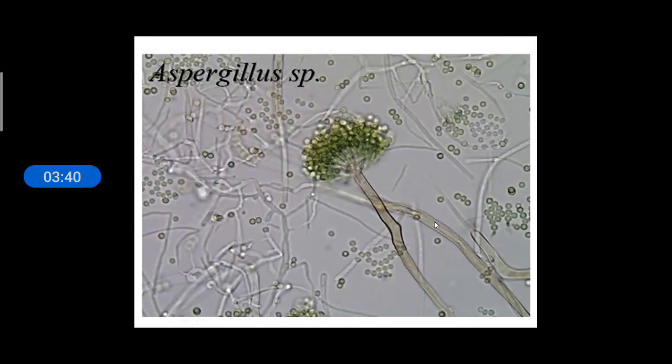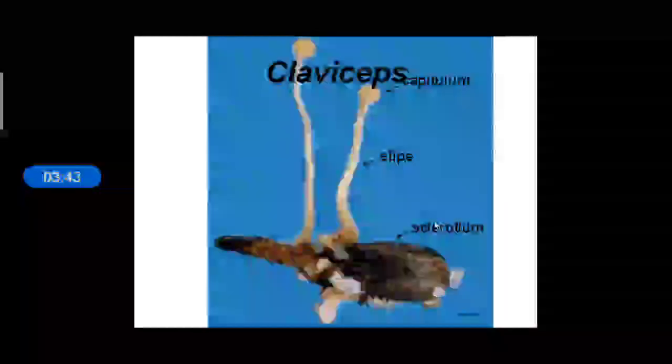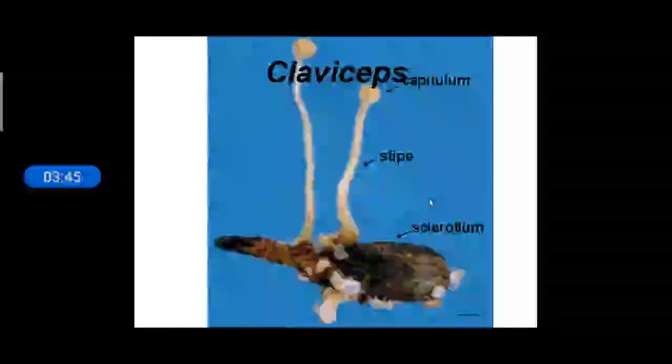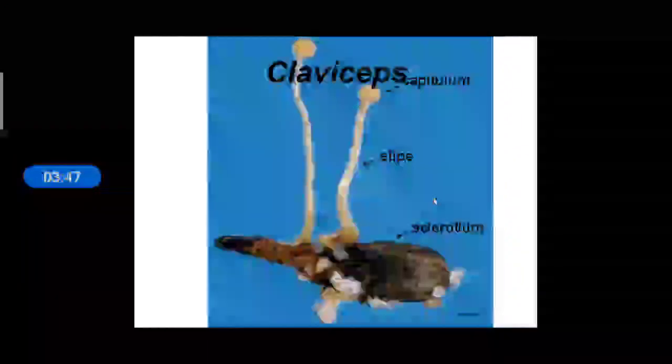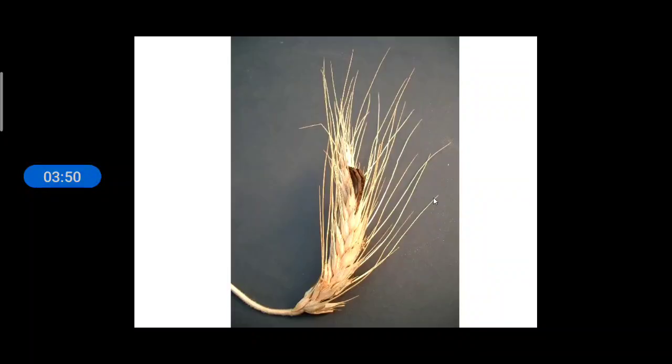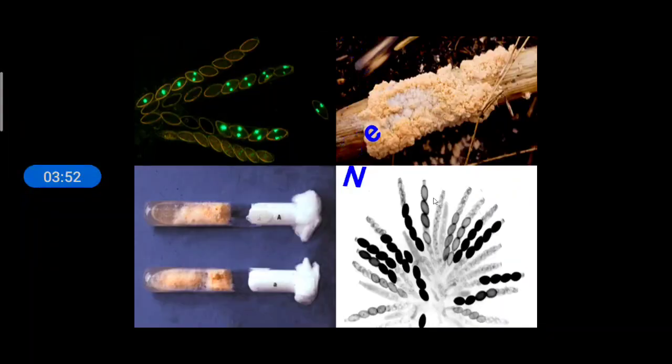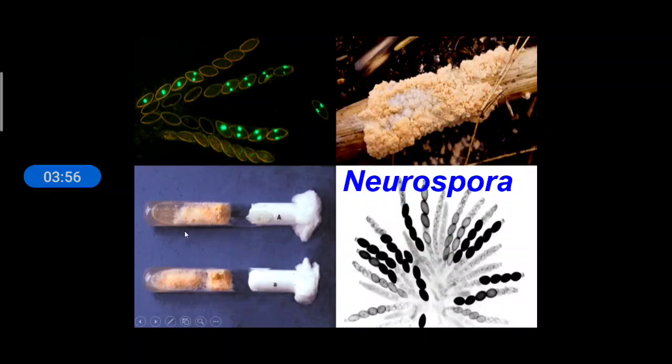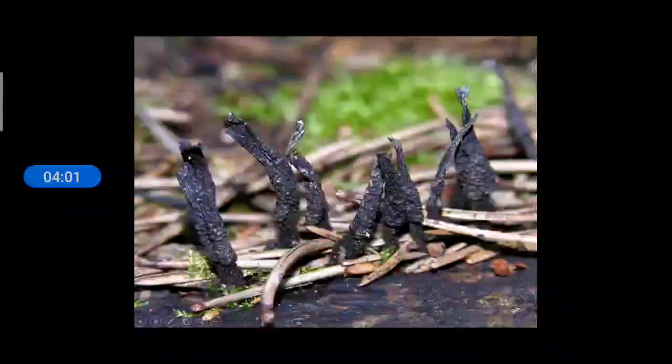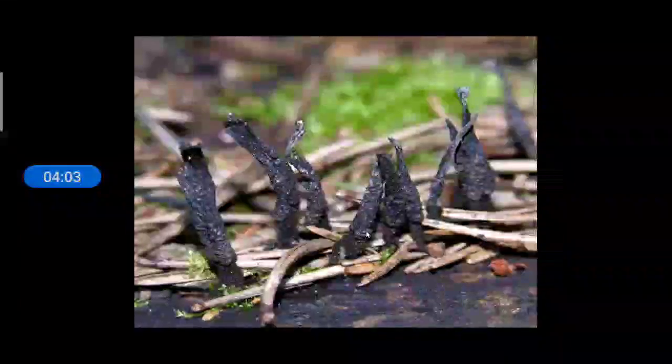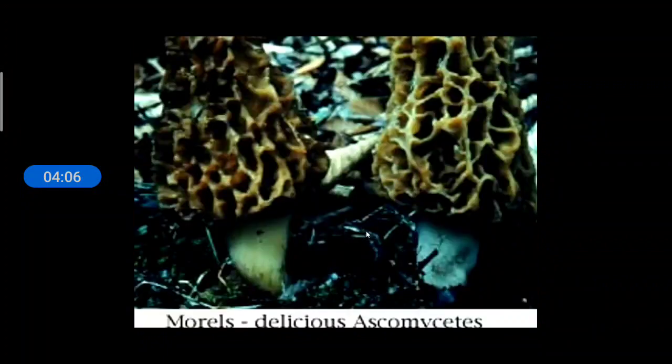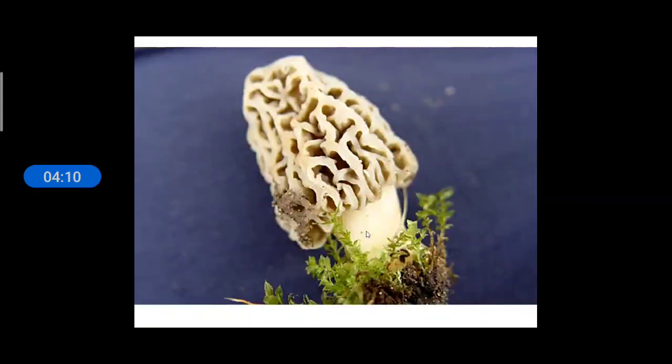Aspergillus is another example. Claviceps also belongs to this group. And Claviceps cause disease on rye. Neurospora is used for biochemical and genetic work. And this is Xylaria dead man's finger. It also belongs to this group, Ascomycetes. And there is an edible fungus called Morels. So this is about this group.